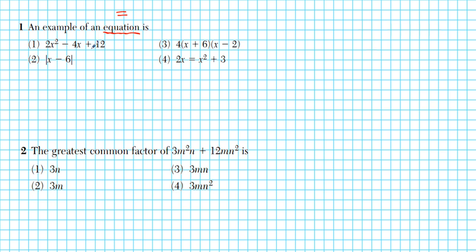Which of them have a statement that two quantities are the same? This is just one quantity — a quadratic trinomial. This is an absolute value quantity. This is a factored quadratic quantity. But this right here is an equation — a quadratic equation — because you have that equal sign there. So our answer is going to be option number 4.